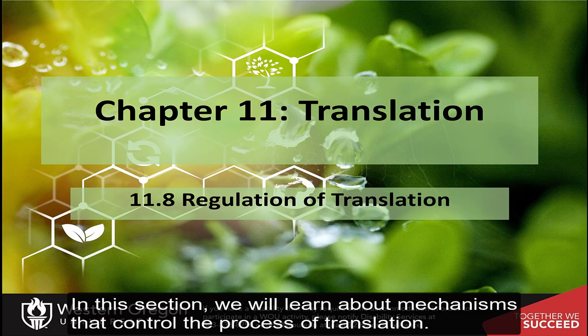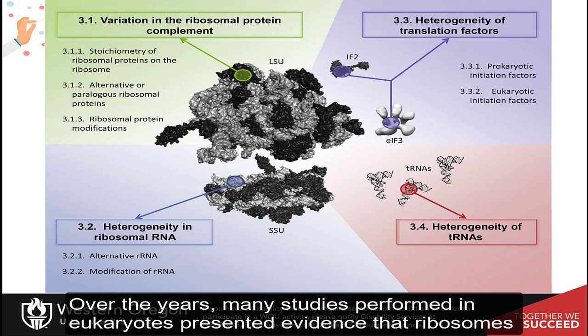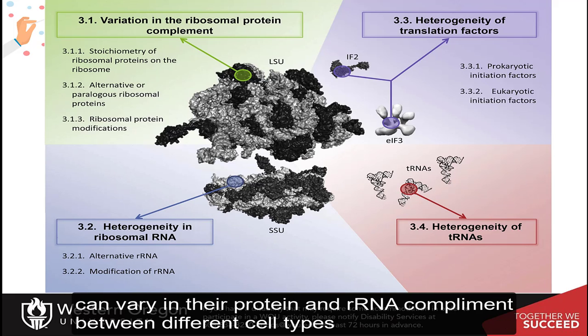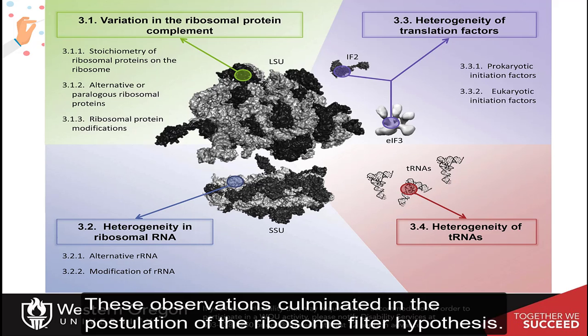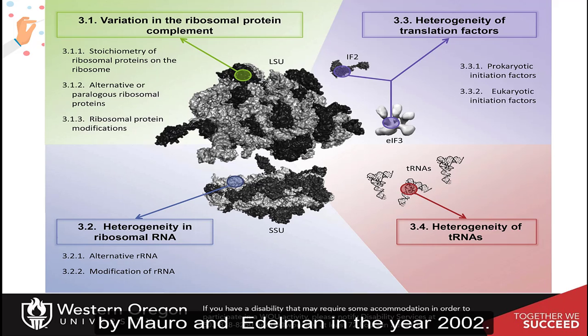In this section, we will learn about mechanisms that control the process of translation. Over the years, many studies performed in eukaryotes presented evidence that ribosomes can vary in their protein and ribosomal RNA complement between different cell types and developmental states. These observations culminated in the postulation of the ribosome filter hypothesis by Marrow and Edelman.